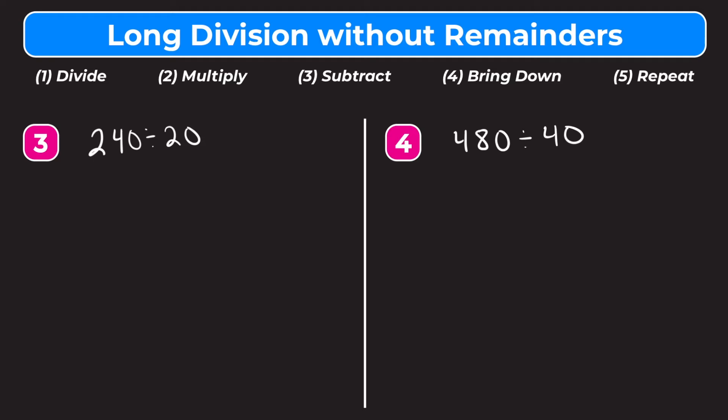In those first two examples both divisors were only one digit, but what happens if we have a two-digit divisor? Let's try number 3: 240 divided by 20. We rewrite this as a long division problem — 240 goes under the division bar as our dividend, and 20 goes outside as our divisor. Step one is divide: how many whole groups of 20 fit into 2? We can't do that, so we move over to the next digit.